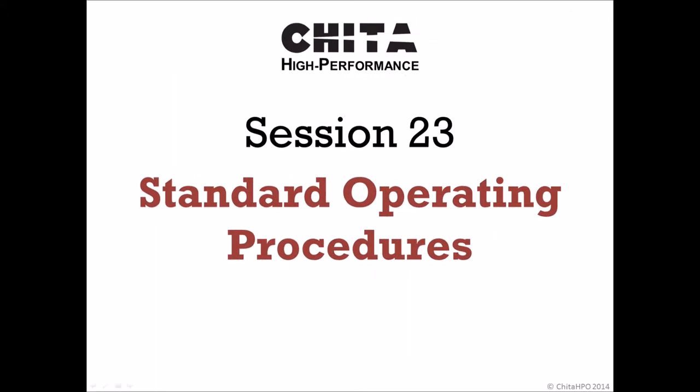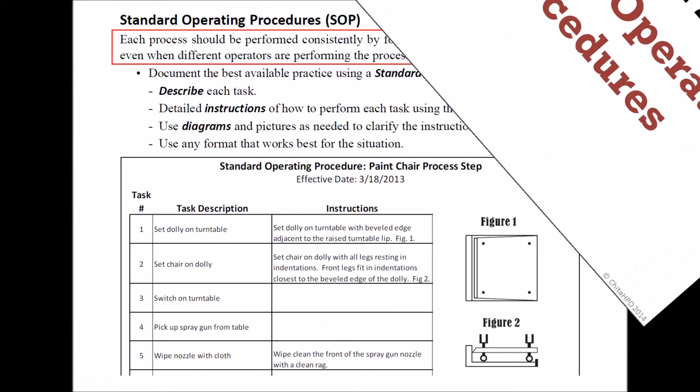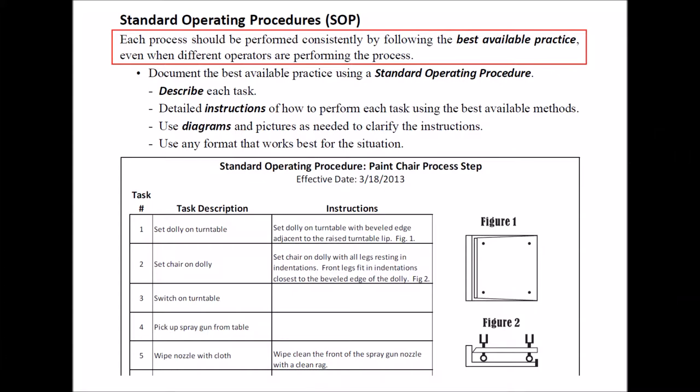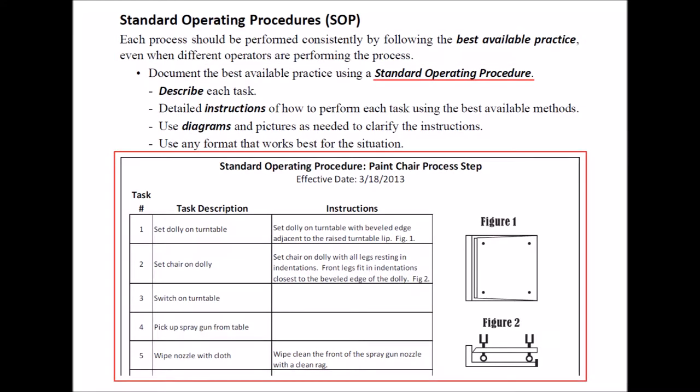In Session 23, you will discuss Standard Operating Procedures and briefly mention Statistical Process Control. Each process should be performed consistently by following the best available practice, even when different operators are performing the process. To do this, determine what the best available practice is and document it using a Standard Operating Procedure, also known as an SOP.